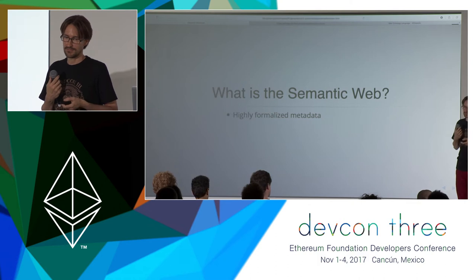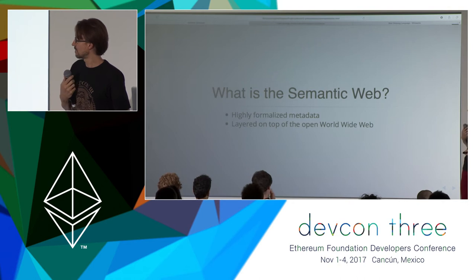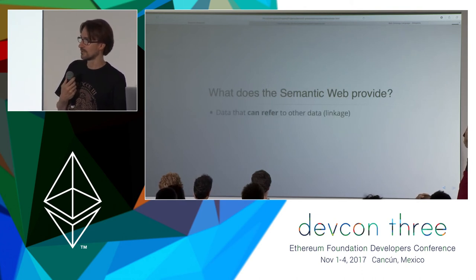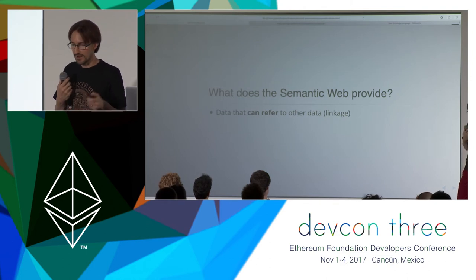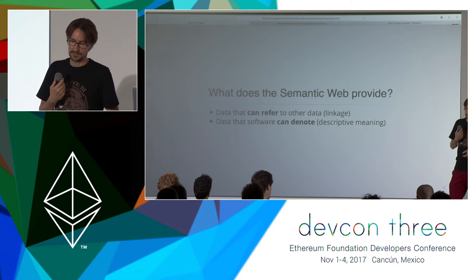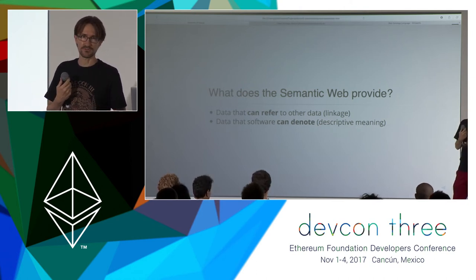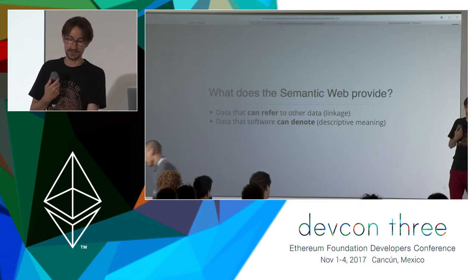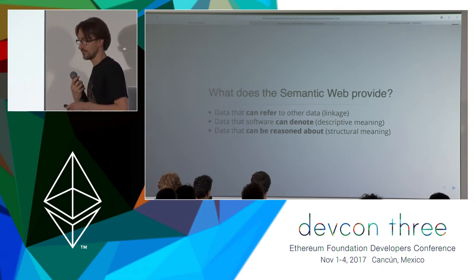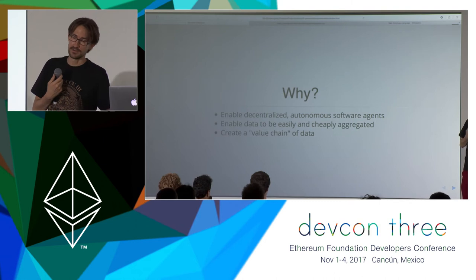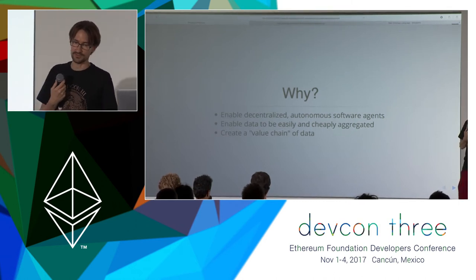The semantic web is highly formalized metadata — very strict. Whether something conforms to your ontology or not is really clear. It's layered on top of the open web with lots of standards, data, and tools. The key things it provides are linkage, lots of references through URIs, and descriptions — like what things are. For example, this object is a person, this object is an airplane. The deeper side is reasoning: you structure your data in a way that something can reason about it.